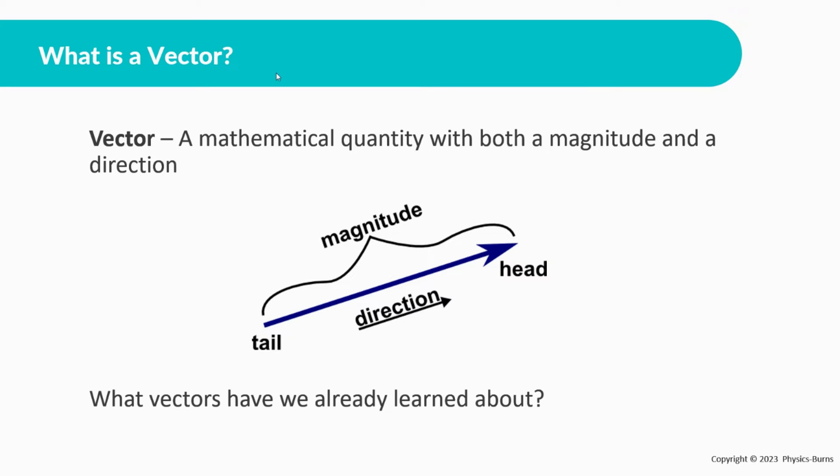All right, so what is a vector? A vector is a mathematical quantity with both a magnitude and a direction. Okay, so a few things to know. When you see a vector, you're going to usually see an arrow. So maybe it could be an arrow pointed to the right, pointed up, pointed down, pointed somewhere at an angle, something like that.